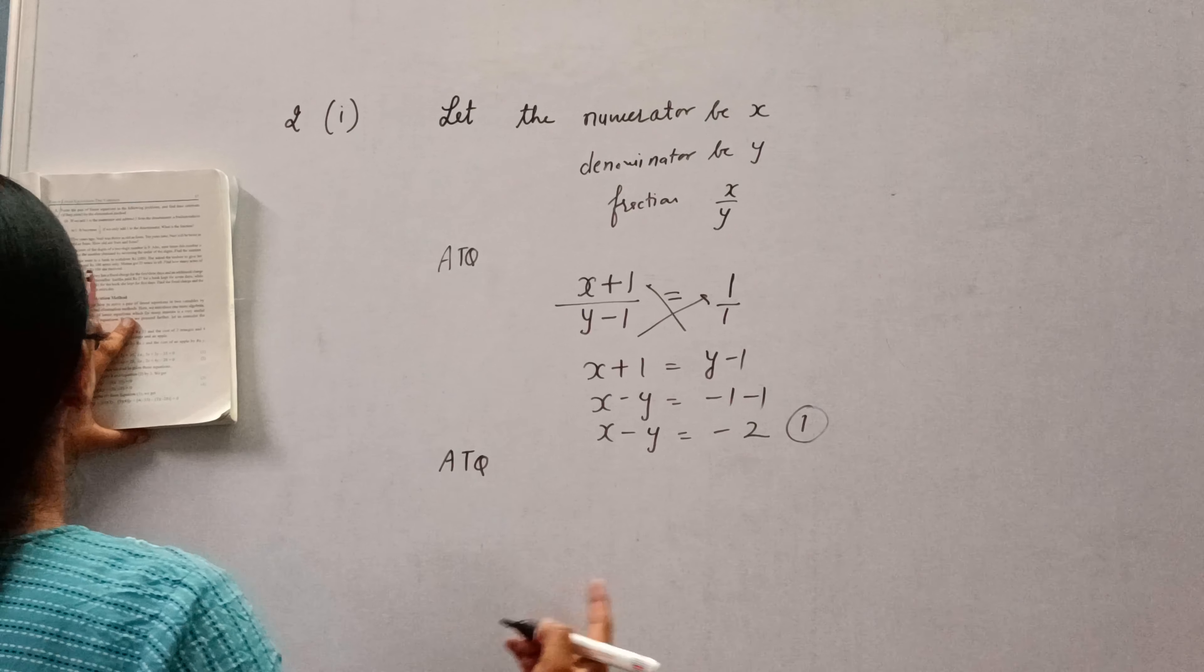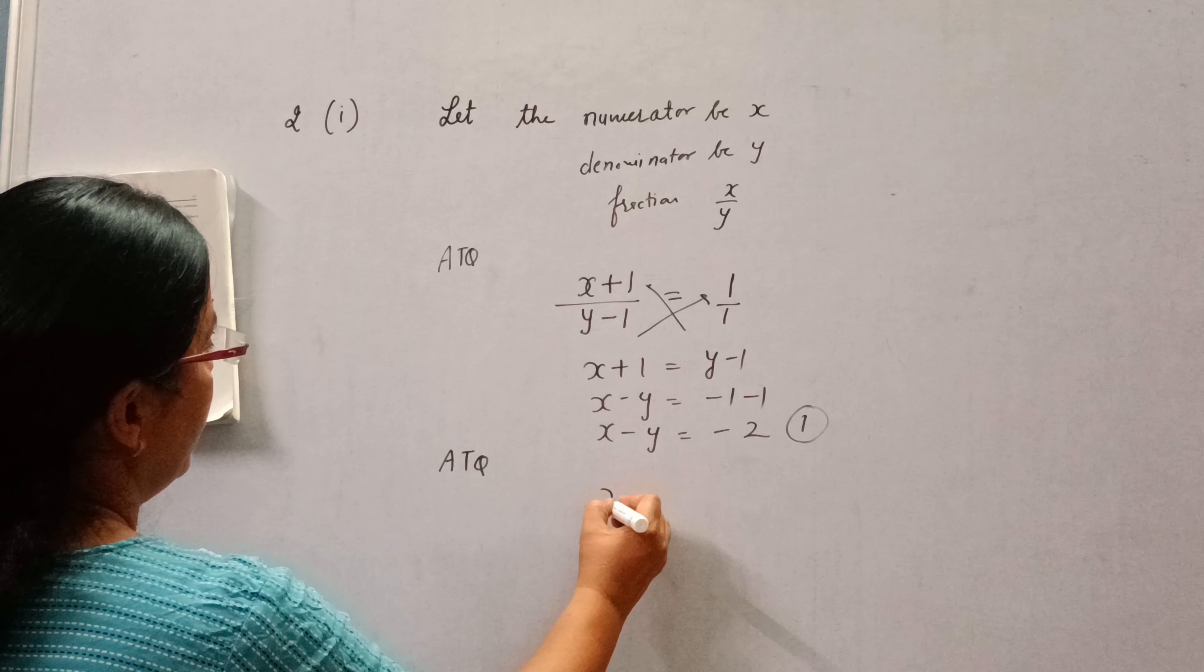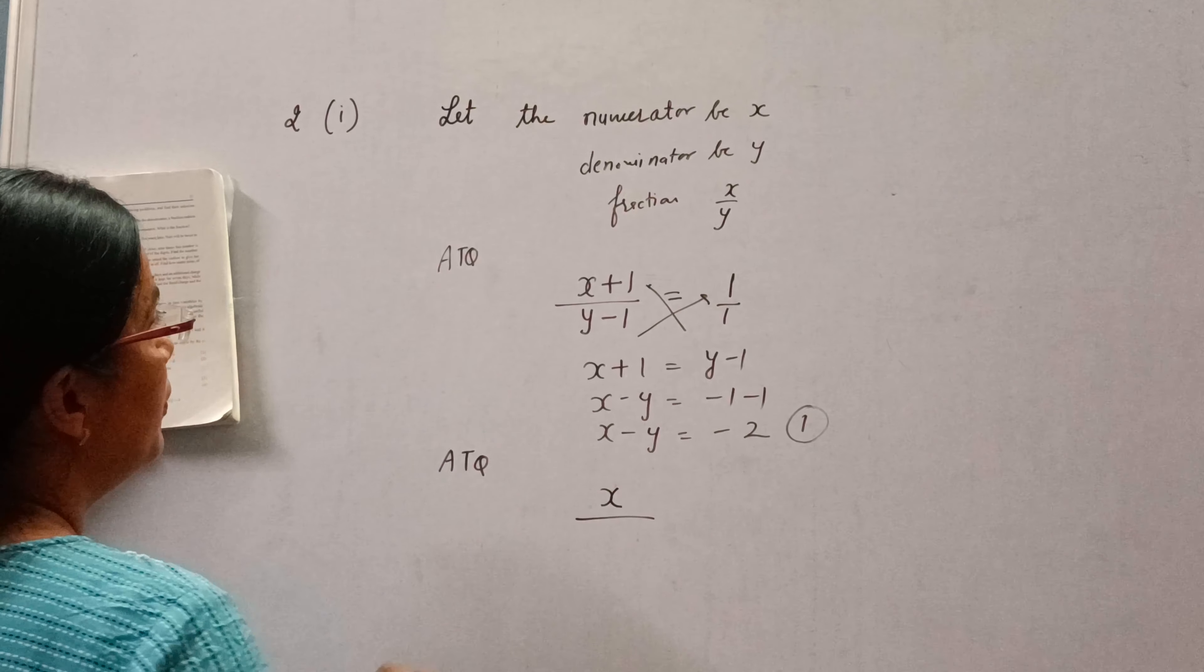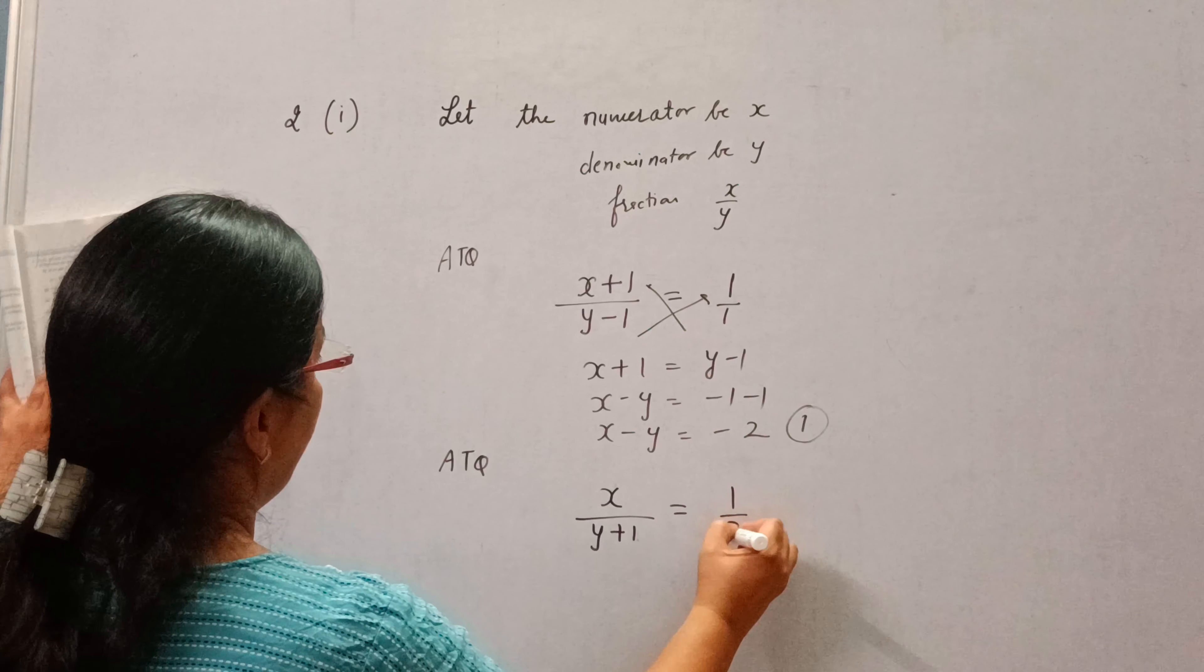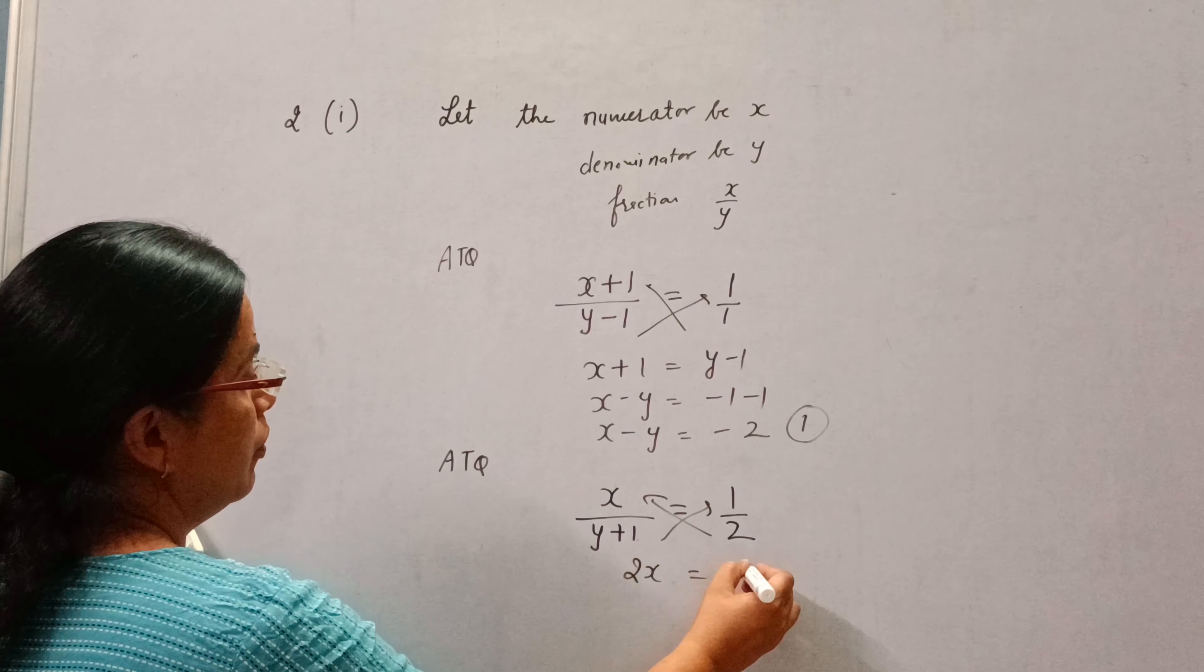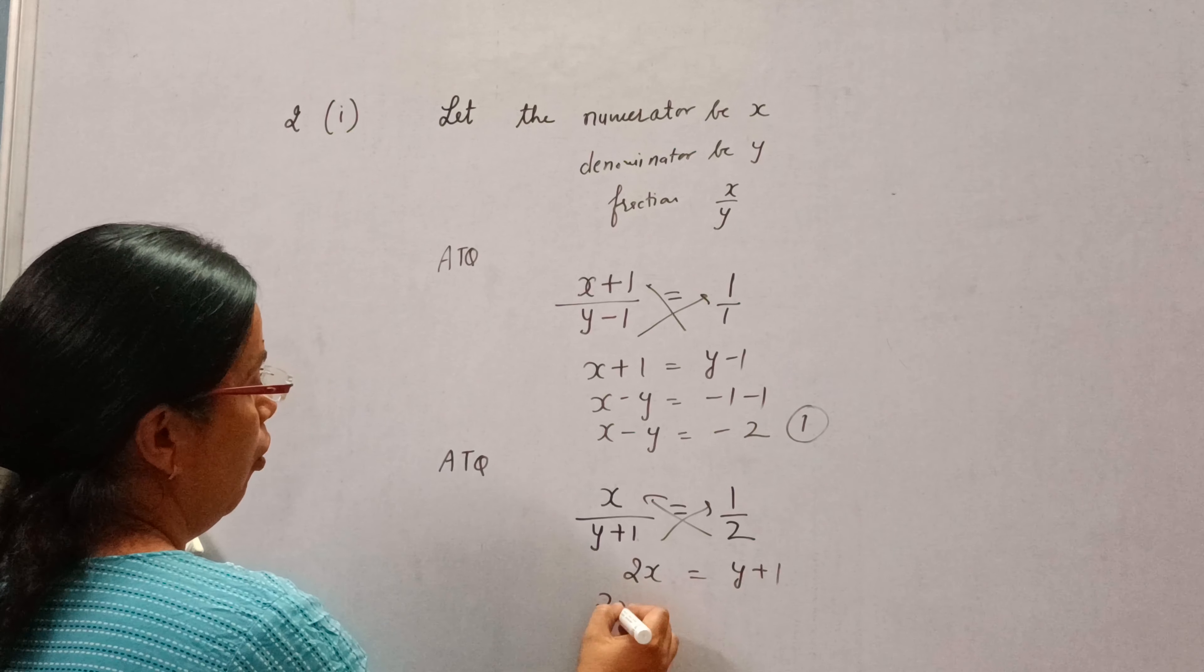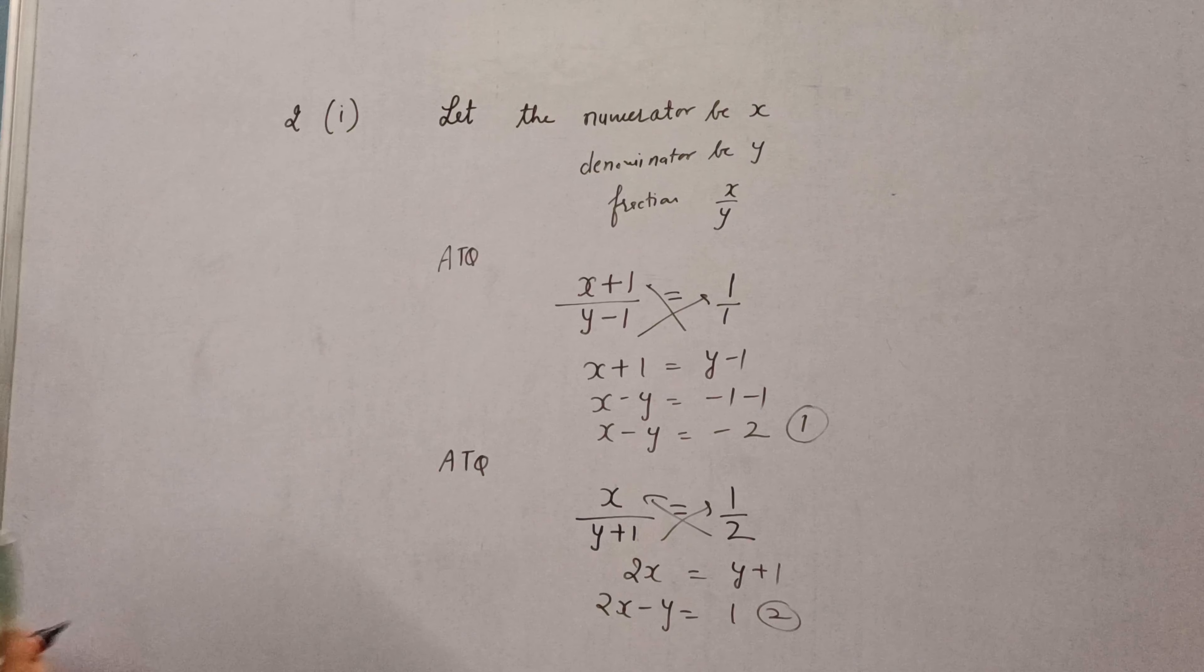Now in the second situation, it becomes 1 by 2 if we only add 1 to the denominator. Nothing should be done to the numerator. Add 1 to the denominator, then it will become 1 by 2. Again cross multiply: 2x is equal to y plus 1, or 2x minus y is equal to 1. This is the second equation.